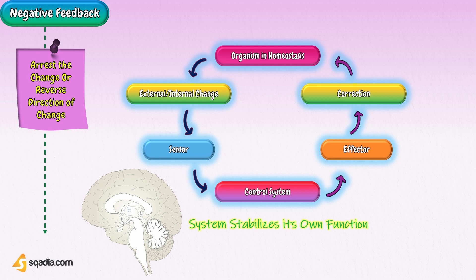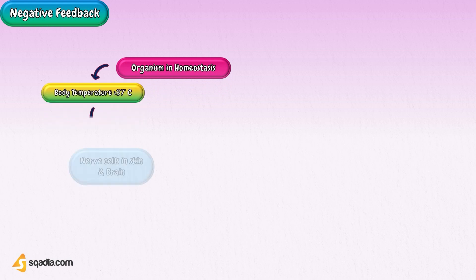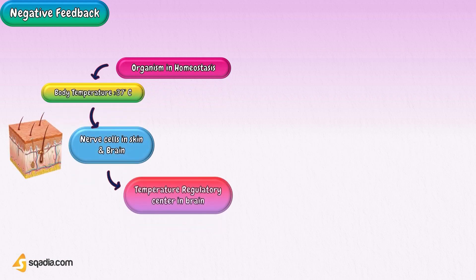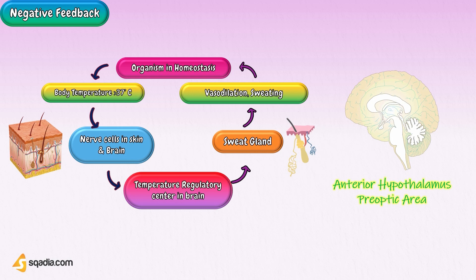Many homeostatic mechanisms in the body function through negative feedback. Let's take an example of thermoregulation. Thermoregulation is an example of negative feedback; it refers to the homeostatic regulation of body temperature. The human body tends to maintain an internal temperature of about 98.6 degrees Fahrenheit, equivalent to 37 degrees Celsius, also referred to as the set point. The core temperature is regulated chiefly by the nervous system, particularly the anterior hypothalamus and the preoptic area of the brain.